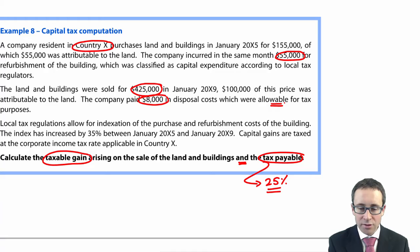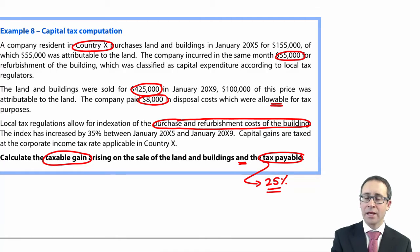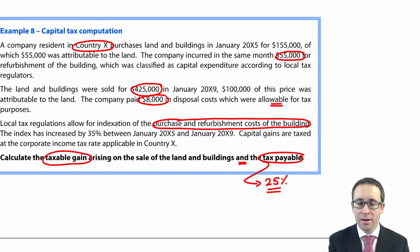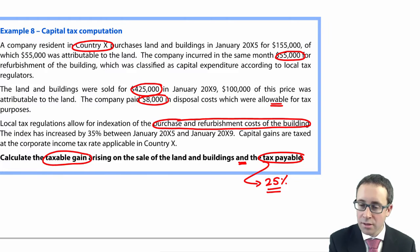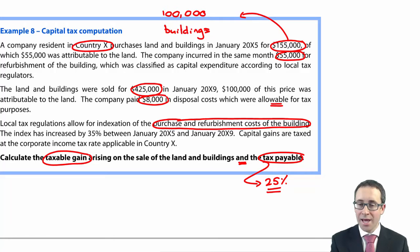Local tax regulations allow for indexation of the purchase and refurbishment costs of the building, not the land. That's why costs were given separately. Of that $155,000 purchase price, $100,000 is for the buildings and $55,000 is for land. The $100,000 building cost and the $55,000 refurbishment will both be indexed, likewise.